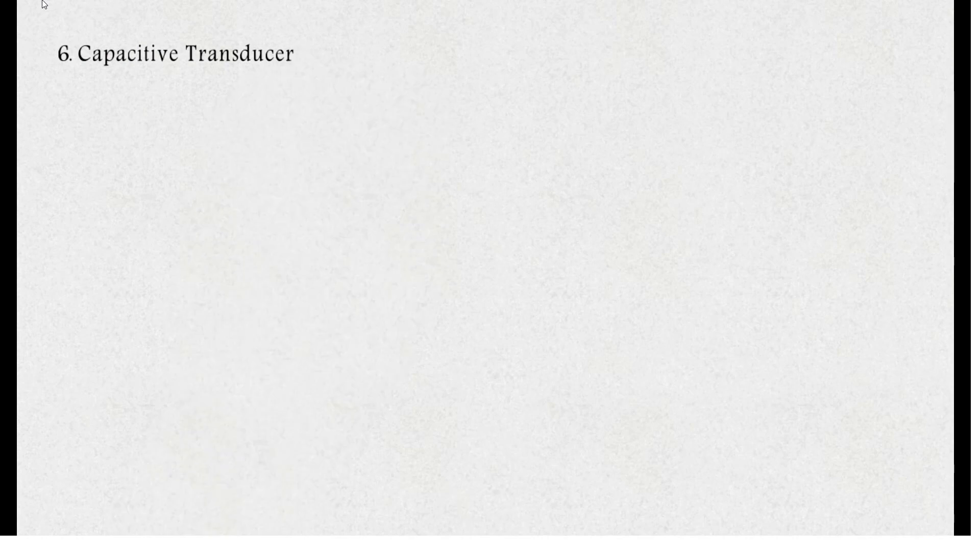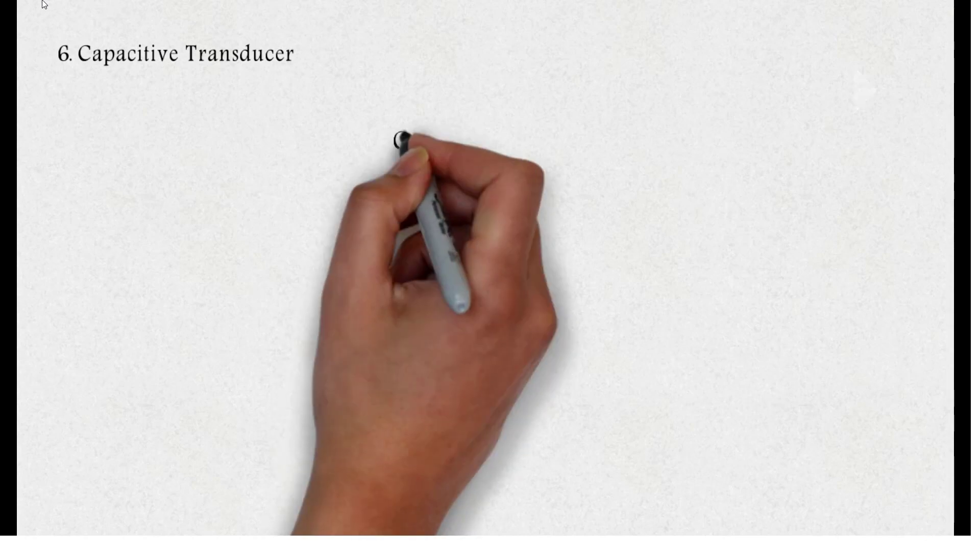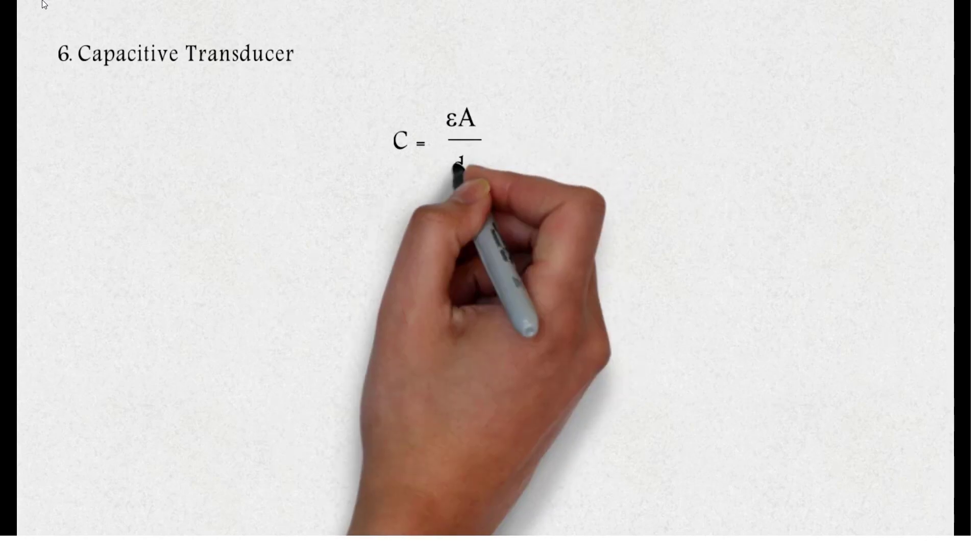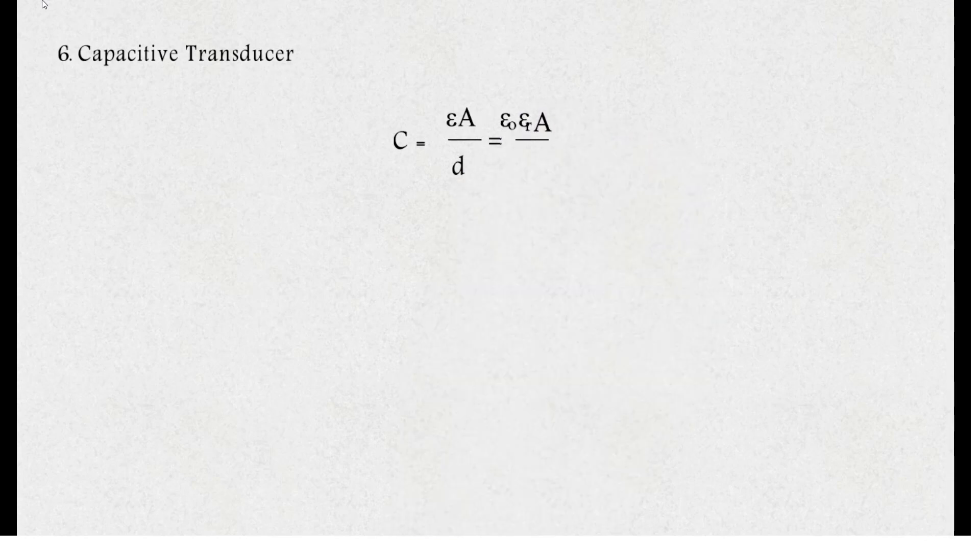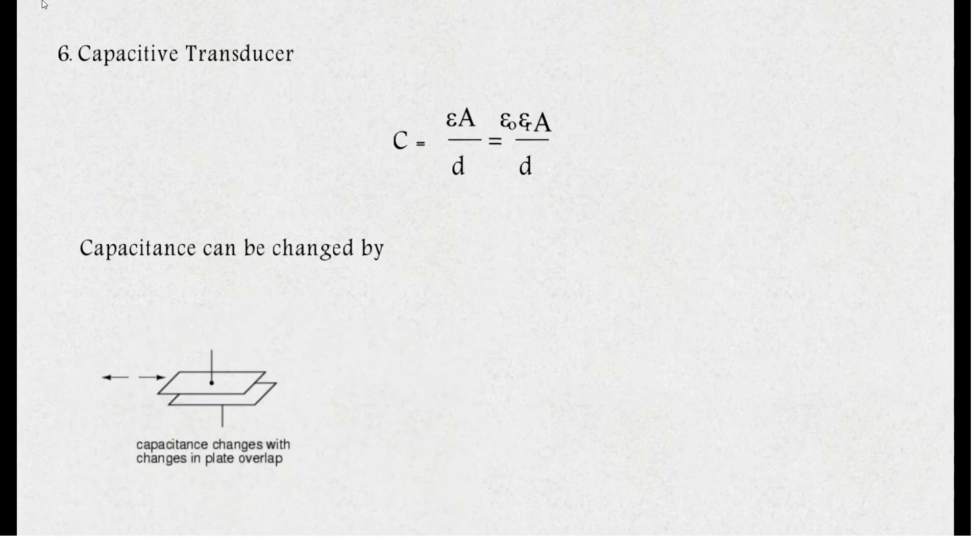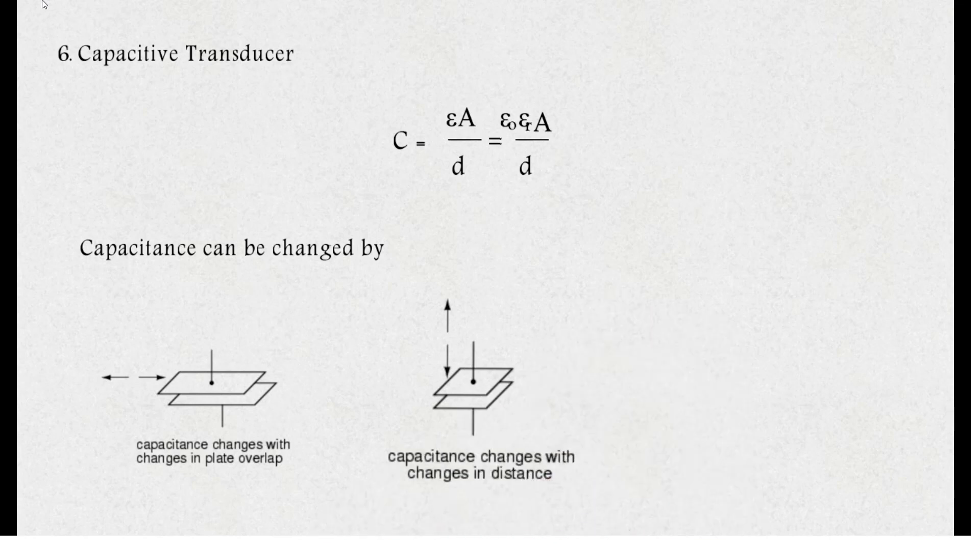The next type of transducers we have is a capacitive transducer. The principle of operation of a capacitive transducer is based upon the equation C equals epsilon A by D, which equals epsilon naught epsilon r A by D, where epsilon naught is the permittivity of free space and epsilon r is the relative permittivity, A is overlapping area and D is difference between the two plates. Capacitance of a capacitor can be changed by change in the overlapping area, change in the distance between the plates, and by changing the dielectric between the plates.